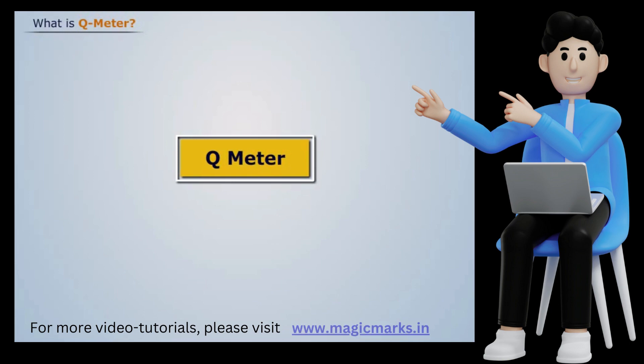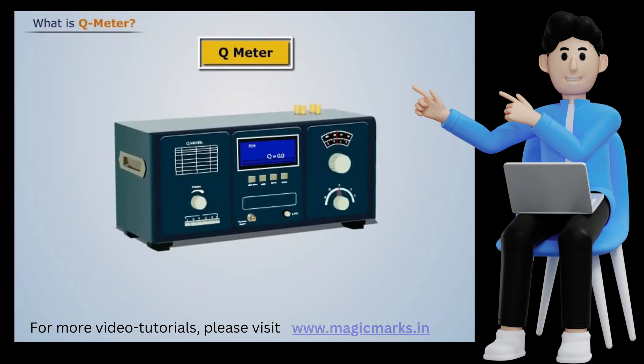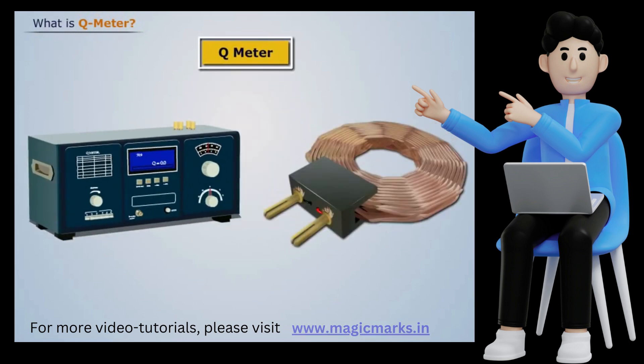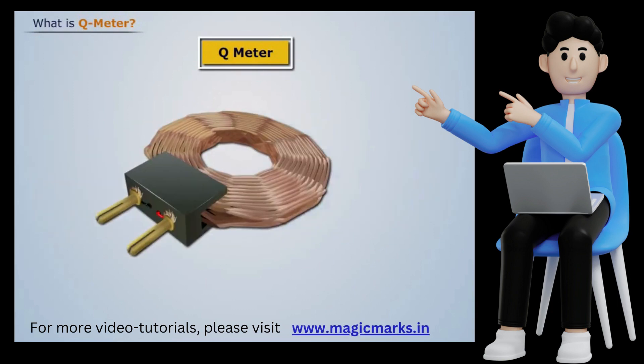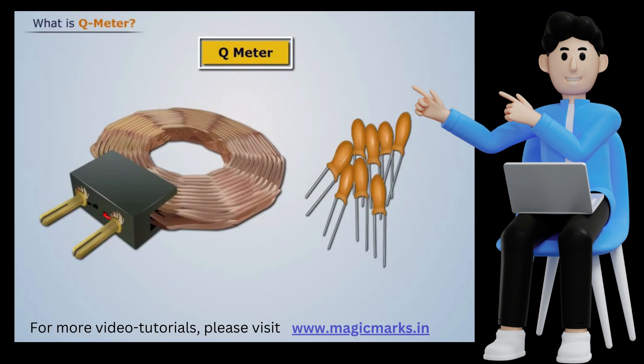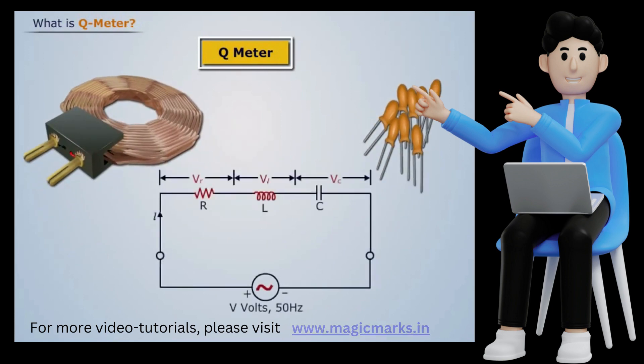Now here we'll discuss about the Q meter in brief. The Q meter is an instrument designed for the measurement of Q factor of the coil as well as for the measurement of electrical properties of coils and capacitors.